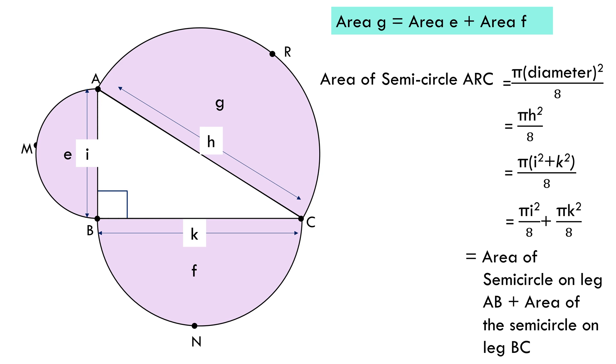And not only is it true for the semicircle, but is true for any similar polygons. That is to say, the area of any similar polygon on the hypotenuse of a right-angle triangle is equal to the sum of areas of the similar polygons on its legs.